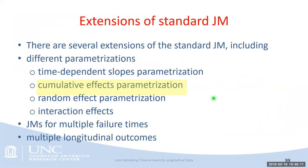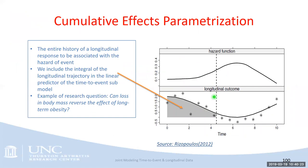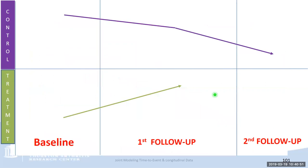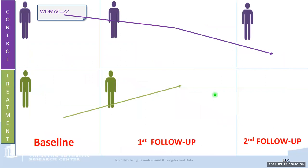The cumulative effect parameterization includes the entire history of the longitudinal exposure in the survival submodel, accomplished using the integral of the longitudinal trajectory. This is useful for questions like: can loss in body mass reverse the effect of long-term obesity? In that case you would use the whole history of the patient's weight over many years. Looking at joint modeling from another perspective: up to this point we've been discussing appropriate modeling of a time-to-event outcome while accounting for time-dependent covariates of interest. But we can also model the longitudinal trajectory in the framework of joint model.